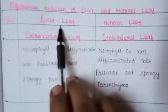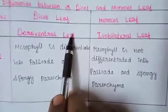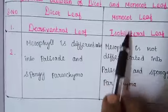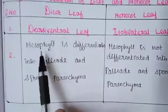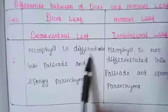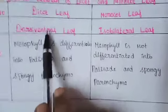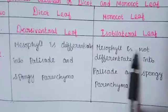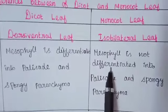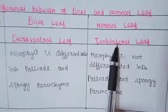Now the difference between dicot and monocot leaf: dicot leaf is called a dorsiventral leaf and monocot leaf is called an isobilateral leaf. In a dorsiventral leaf, mesophyll is differentiated into palisade and spongy parenchyma. In an isobilateral leaf, mesophyll is not differentiated into palisade and spongy parenchyma.